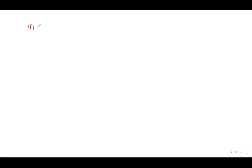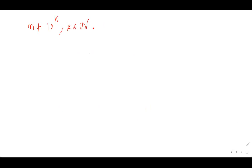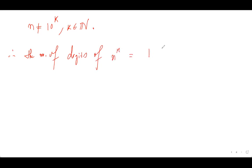Now we consider n that is not of the form 10 to the power 2k. Actually, we exclude all n of the form 10 to the power k for any natural number k, because even powers already satisfy the claim, and odd powers of 10 have even digits and are already excluded. The number of digits of n to the power r is 1 plus floor of r times log base 10 n, which equals 1 plus floor of r times (even integer e plus fractional part).